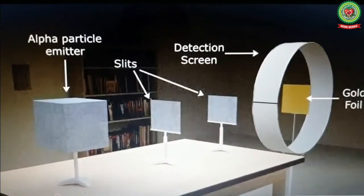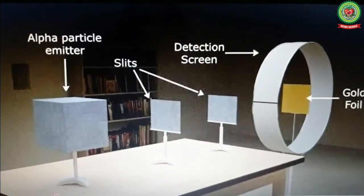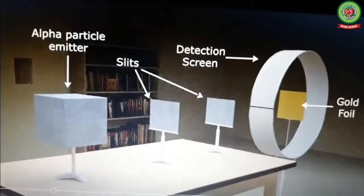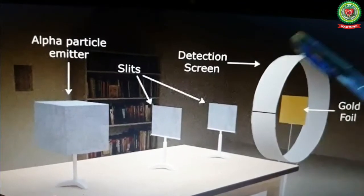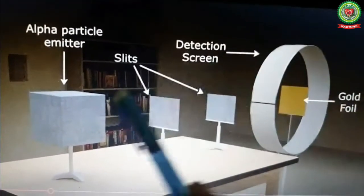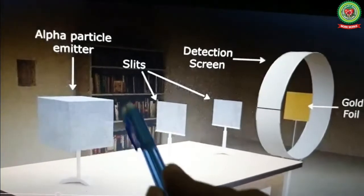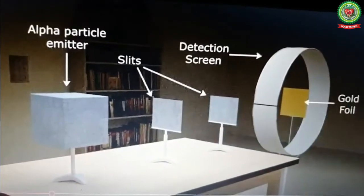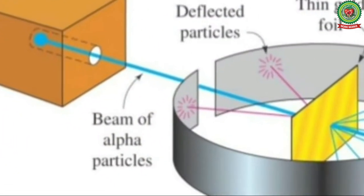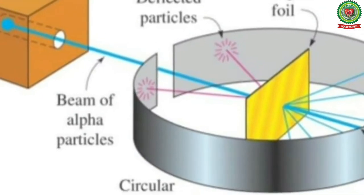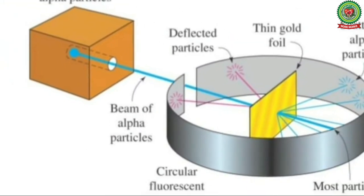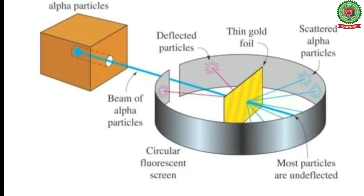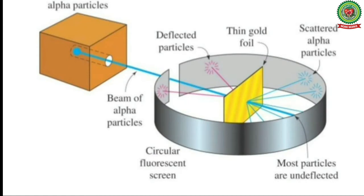The experiment setup consisted of the alpha particle emitter in a lead container with slits, the gold foil placed in the middle, and a movable detection screen surrounding it. Slits ensured the alpha particles passed in a straight line without disturbance. Alpha particles emitted from the lead container fell on the gold foil, which contains hundreds and thousands of atoms.